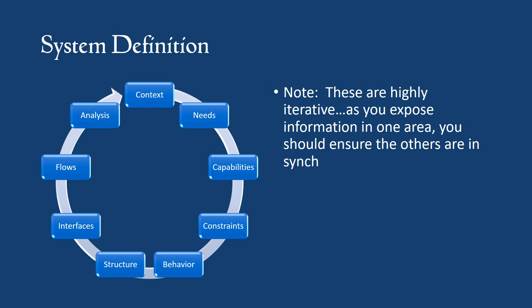When we consider system definition, these are basically what we're looking at: the context of the system, the needs of the stakeholders, what they want the system to do, what capabilities it has to have, constraints placed on the system of things that it absolutely has to do or is not permitted to do, its behavior, its structure, the interfaces, the flows of information, material, and energy, and then analytical work.